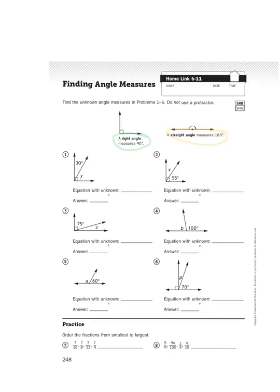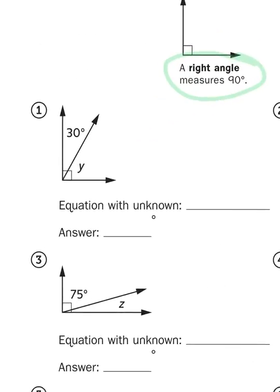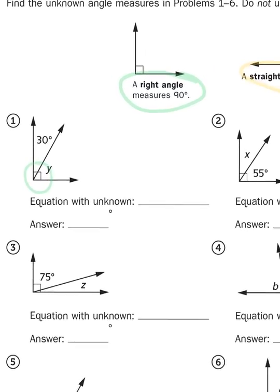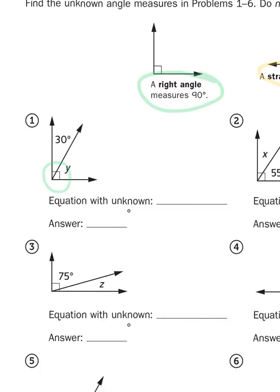If you take a look at problem number one, you have an unknown angle that is part of a right angle. You can tell it's a right angle because of the square corner. I know that the entire angle here is 90 degrees. So my equation with the unknown is going to start out with 90 degrees minus. And what are we subtracting? We're subtracting the other known. That would be 30 degrees.